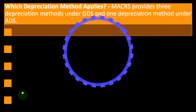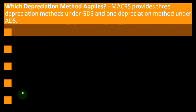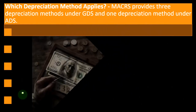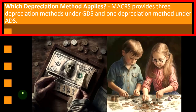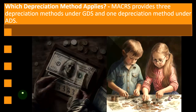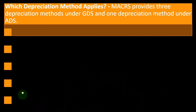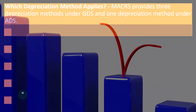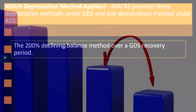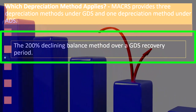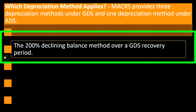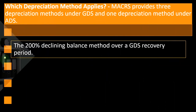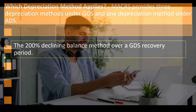Continuing with MACRS depreciation — one of the major depreciation formats under the tax code — which depreciation method applies? MACRS provides three depreciation methods under GDS, the standard usual format, and one depreciation method under ADS, the less usual standard. The 200% declining balance method over the GDS recovery period is one of the MACRS depreciation methods.